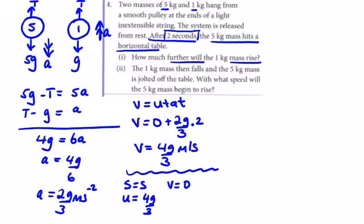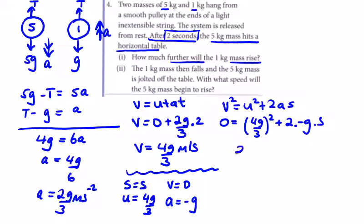What's stopping it? Gravity is stopping it, so the acceleration is -g. Using v² = u² + 2as, we get: 0 = (4g/3)² + 2(-g)s, so 2gs = 16g²/9.